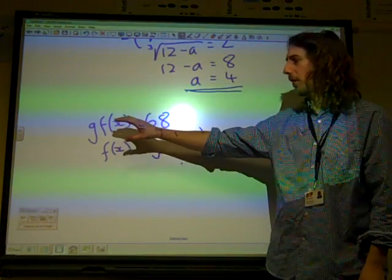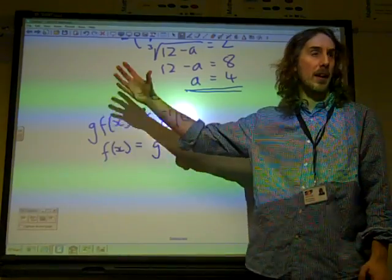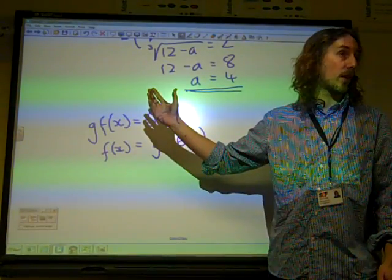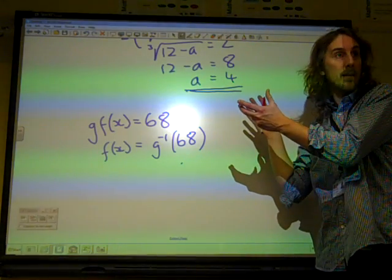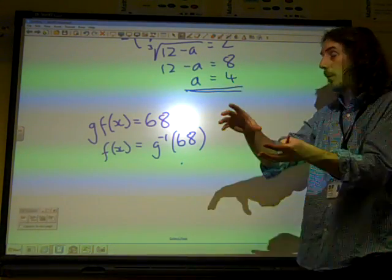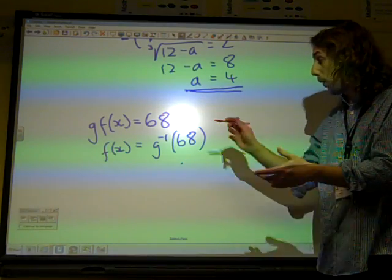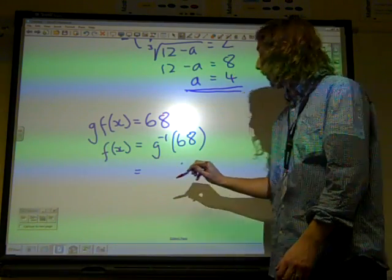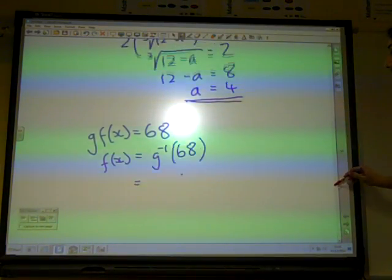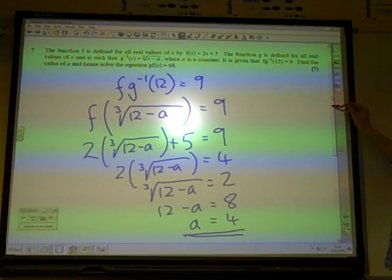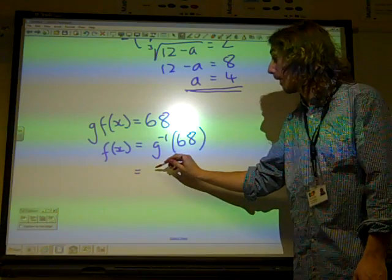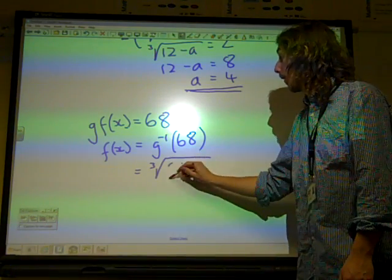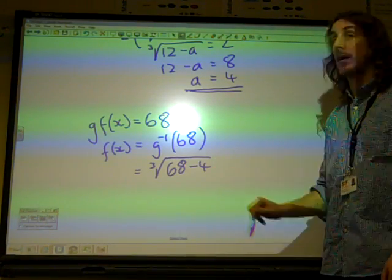If what you get, you take f(x) and you put it into g and you get 68 as your answer, so if you undo the 68 bit, then that must leave you with what you've got out of there. And we know what the inverse of g is. The inverse of g was defined as being cube root of x minus a, cube root of x minus 4. So that is the cube root of 68 minus 4.